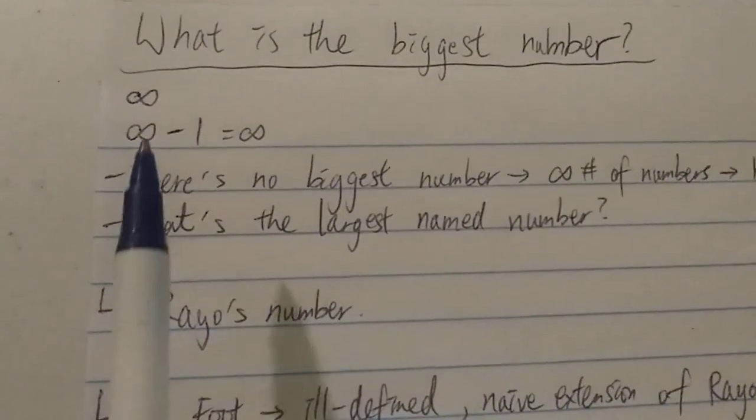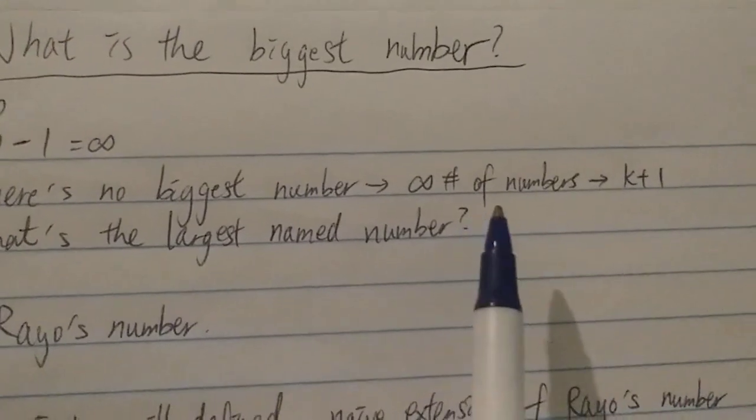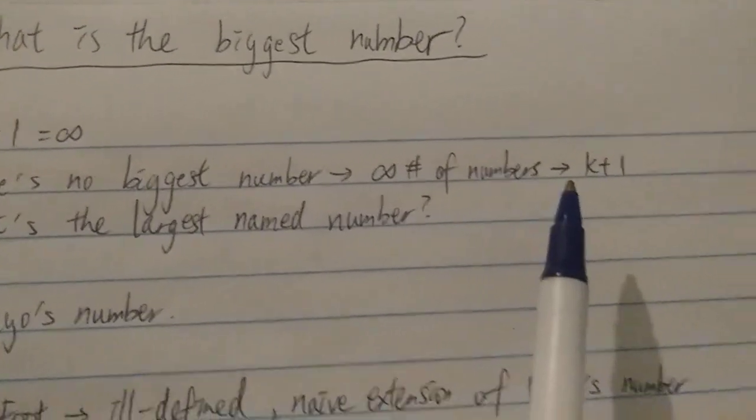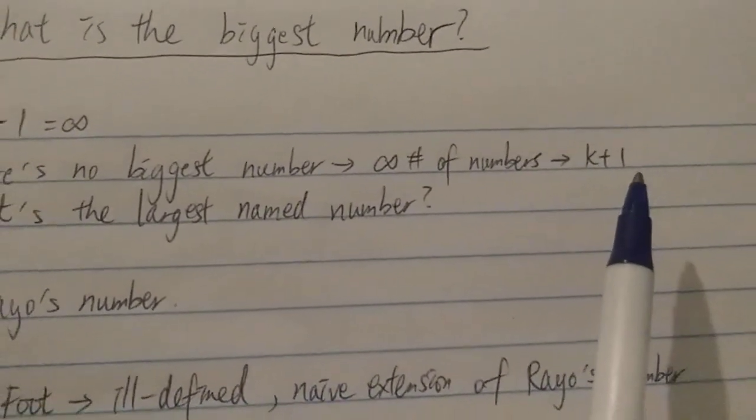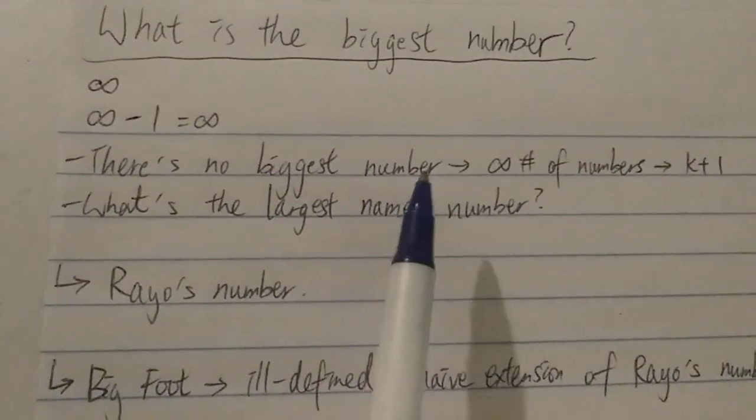In fact, there's actually no biggest number because there are infinite number of numbers. You can always add 1 to any number and make it bigger. There's no end to it, and therefore there's no biggest number.